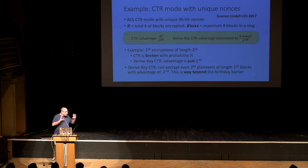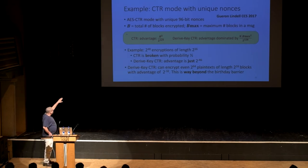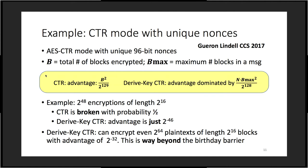Let me give one example using the simplest mode — AES counter mode — with a unique 96-bit nonce. If B is the total number of blocks encrypted under a key and B_max is the maximum number of blocks in a message, then the counter mode advantage is B² over 2^{129}. If you prepend key derivation, you can prove the bound is N × B_max² over 2^{128}. There is a big difference: if we take 2^{48} encryptions each of length 2^{16} blocks, then counter mode is broken at the birthday bound. But the key-derived mode over counter mode has 2^{-46} advantage, meaning you can do 2^{64} plaintext encryptions of length 2^{16} blocks and still remain within the magic bound of 2^{-32}. This is how we extend the lifetime of a key.